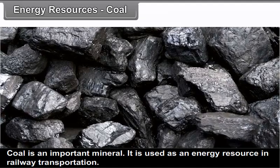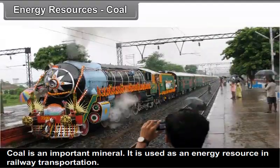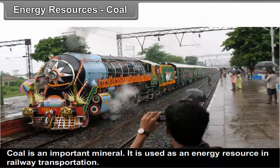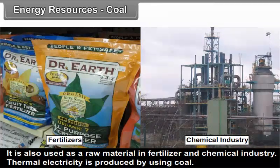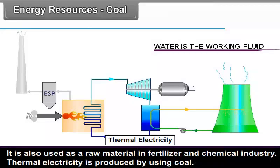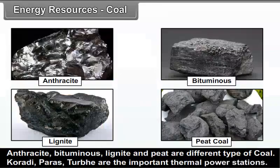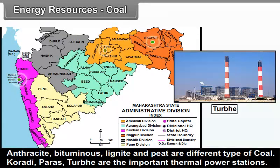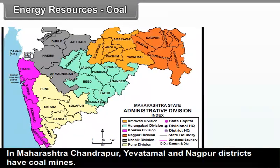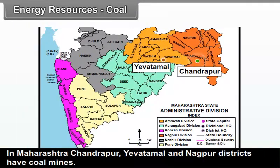Energy Resources — Coal: Coal is an important mineral used as an energy resource in railway transportation. It is also used as a raw material in fertilizer and chemical industries. Thermal electricity is produced by using coal. Anthracite, Bituminous, Lignite and Peat are different types of coal. Koradi, Paras and Tirora are the important thermal power stations. In Maharashtra, Chandrapur, Yavatmal and Nagpur districts have coal mines.